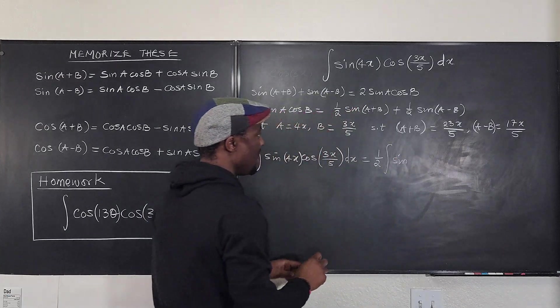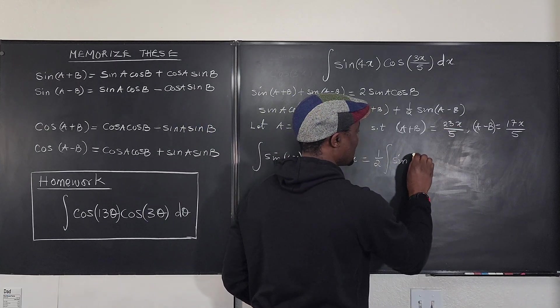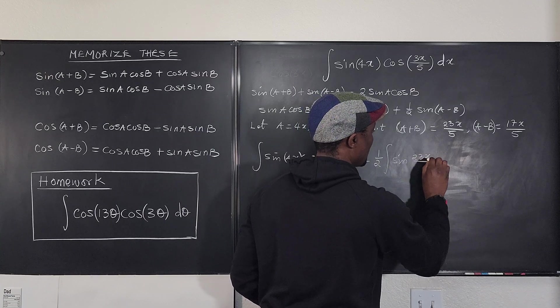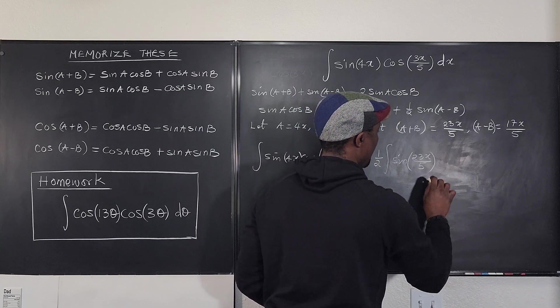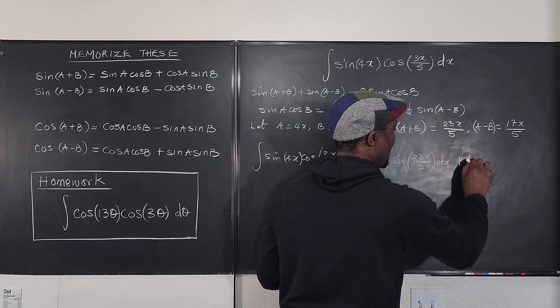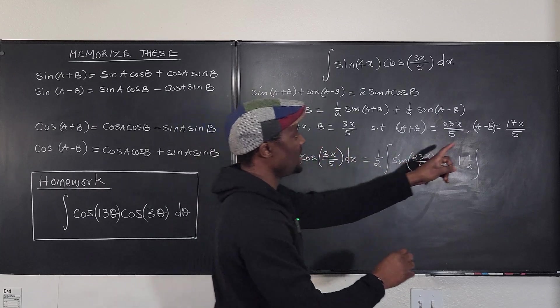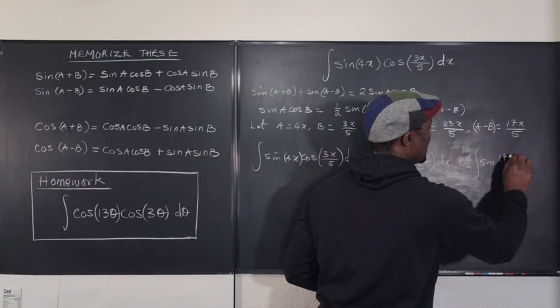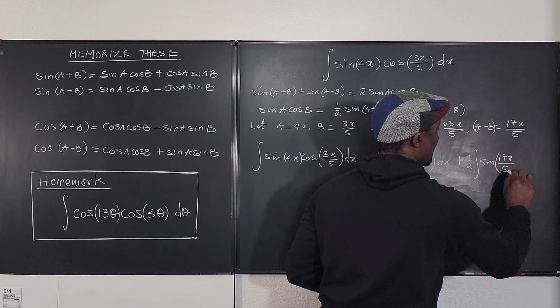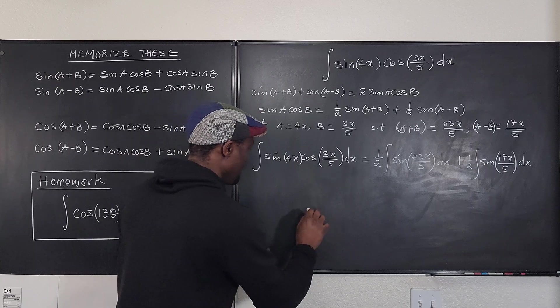Plus 1/2 the integral of A-B, which is going to be sin(17x/5)dx. We know how to integrate. Let me just bring this here so I don't go too far.